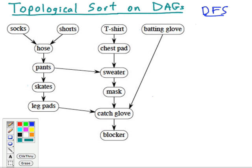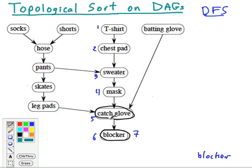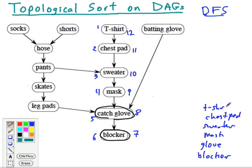I'm going to run this quickly based on the demonstration I gave before. This side is discovery time, and the other side will be finish time. We color it black at finish time and put it on the list. DFS asks: is there something else I haven't done yet? Yes — let's start with shorts. Now it goes here with discovery time 13, and notice here that this node is already visited, so it doesn't go there. That's a finished time.